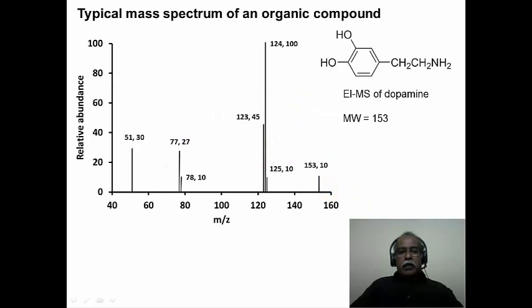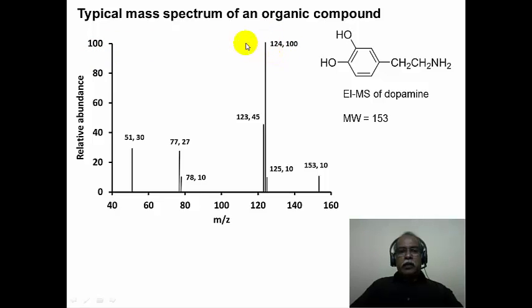Here is how a typical mass spectrum looks. Unlike other spectroscopic techniques where the x-axis is an energy scale, in mass spectrometry the x-axis is always m/z — the mass-to-charge ratio — plotted against the relative abundance of the various ions produced. Relative ion abundance is expressed as a percentage relative to the most intense ion. In this case, the ion at molecular weight 124 corresponds to 100% abundance, and all other ions are calibrated relative to that.